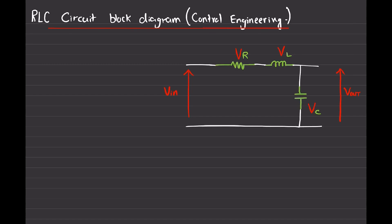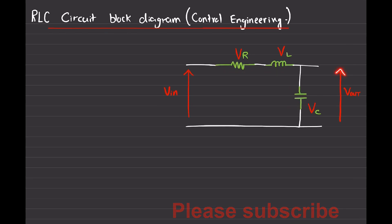As we know, an RLC circuit means the circuit that consists of a resistor, inductor, and a capacitor. In this diagram the output is being taken across a capacitor which is known as V out, and the input voltage has been given across a resistor which is named as V in.